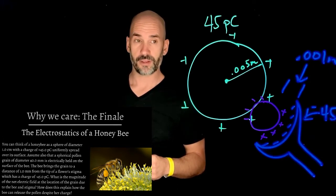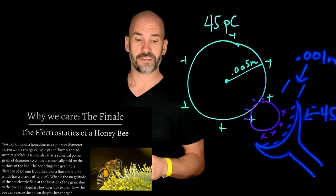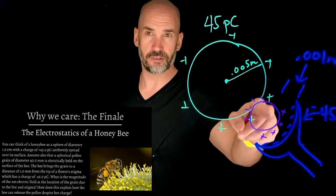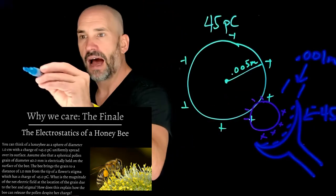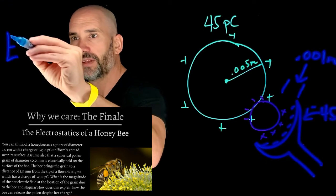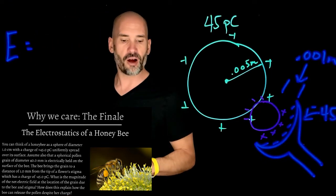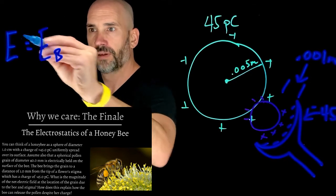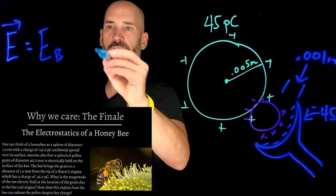What do I know now? I know that we don't just want to find out why this is attractive, but we actually want to find out what the electric field is right there. Okay. So I have an electric field, right, that is partly the electric field due to the bee. So I'm going to say EB and partly the electric field due to the stigma.